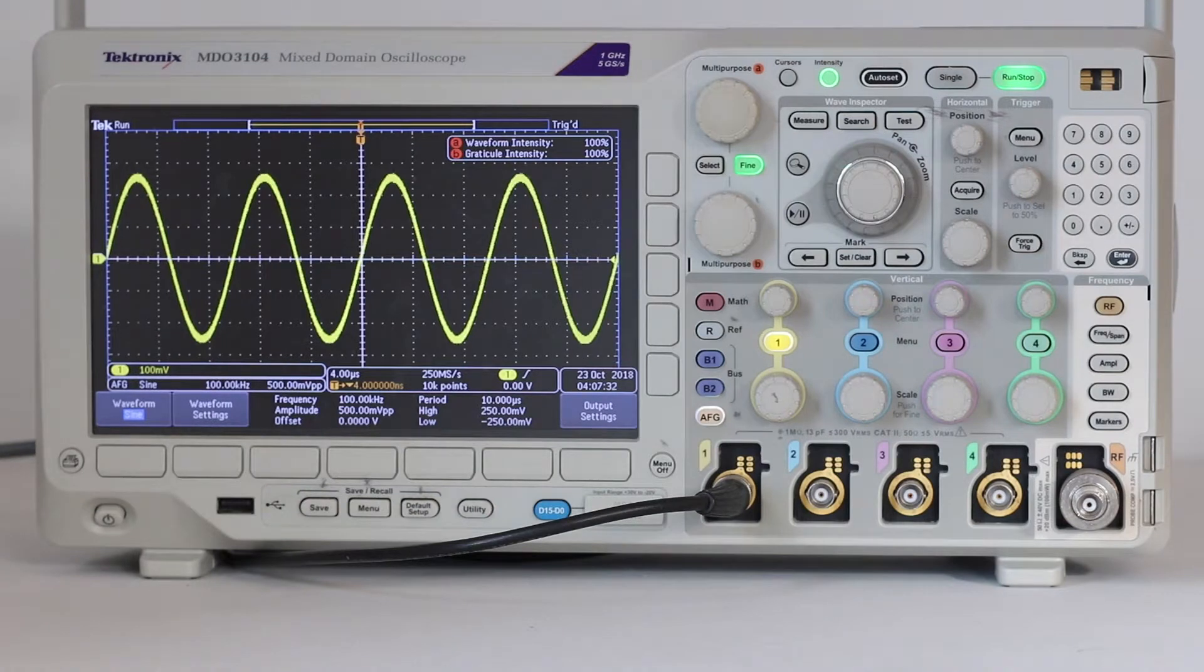In contrast, there is a separate set of scale and position knobs in the vertical section for each of the channels. We can display one, two, three, or four waveforms derived from separate signals in a four-channel oscilloscope.